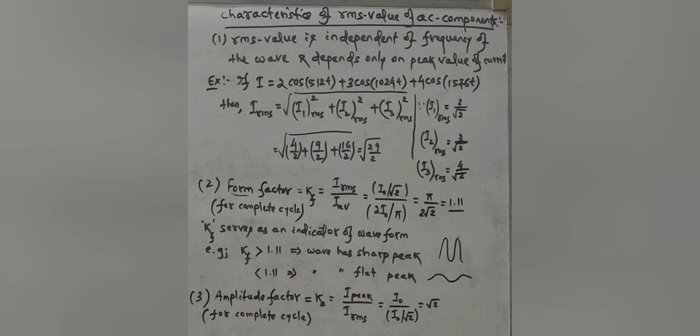So RMS is independent of frequency. The form factor, an important indicator of waveforms, is defined as k_f = i_RMS / i_average = (i₀/√2) / (2i₀/π) = π/(2√2) ≈ 1.11. If the form factor is greater than 1.11, the wave has a sharp peak; if less than 1.11, it has a flat peak. Similarly, the amplitude factor k_A = i_peak / i_RMS = i₀ / (i₀/√2) = √2.